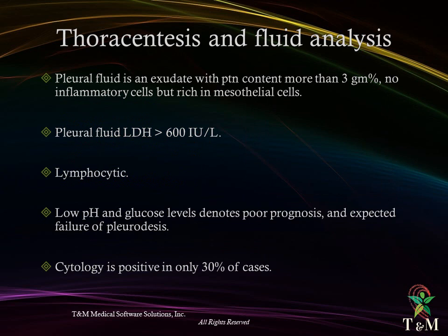Thoracentesis and fluid analysis: pleural fluid is an exudate with a protein content of more than 3 grams percent, limited inflammatory cells but rich in mesothelial cells. Pleural fluid LDH is usually more than 600 international units per liter. Lymphocytosis is present; the presence of low pH and glucose level denotes poor prognosis and expected failure of pleurodesis. Cytology is positive in only 30% of cases.